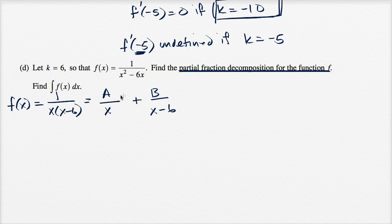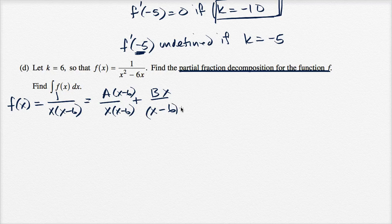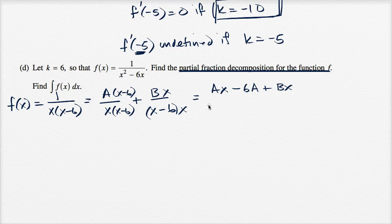If I actually had to add these two, I would find a common denominator — the best common denominator is the product of the two expressions. So I multiply the numerator and denominator of the first term by x minus six, and the second term by x. Distributing gives ax minus six a plus bx, all over x times x minus six.